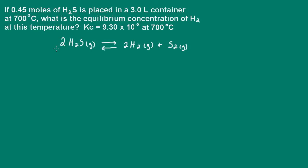In this problem, we're told that 0.45 moles of H2S is placed in a 3-liter container at 700 degrees. We're asked to calculate the equilibrium concentration of hydrogen gas at this temperature. We're given the equilibrium constant at 700 degrees Celsius, so we need to determine the equilibrium concentrations of the reactants and the products.